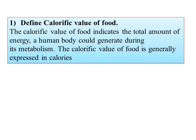First question: define the calorific value of food. The calorific value of food indicates the total amount of energy a human body could generate during its metabolism. The calorific value of food is generally expressed in calories. Nutrients such as carbohydrates, protein, and fat, when they enter our body and undergo metabolism, release energy.